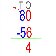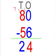So now we take away 6 from 10, which equals 4. Now we take away 5 from 7, it equals 2. So 80 take away 56 equals 24. We've got our answer. See how easy that was?